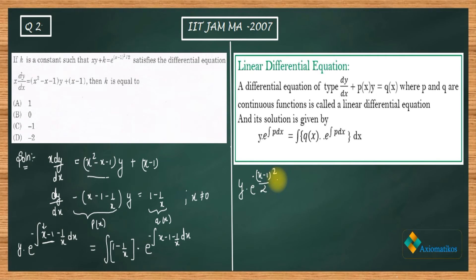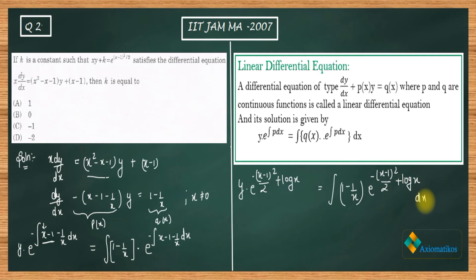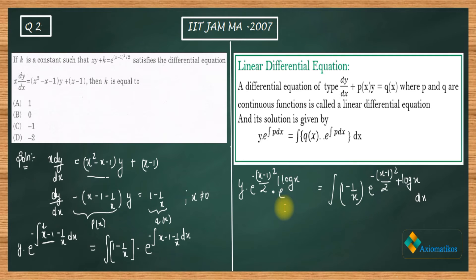So the integration gives us minus (x−1)²/2 plus log x. On the right-hand side, we have the integral of (1 − 1/x) · e^(minus (x−1)²/2 + log x) dx. We can separate the e^(log x) term, and since e^(log x) equals x, we can factor out x.